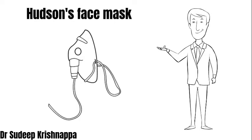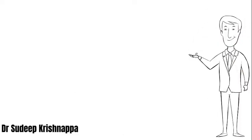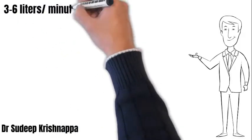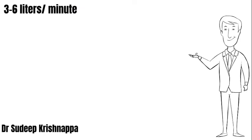Over the course of the next few minutes, we will be talking about Hudson's face mask with regards to what is the minimum flow needed — whether it's an arbitrary number or if there is a rationale behind it. We will also be talking about the effect of altering the fresh gas flow on two of the most important parameters: rebreathing and the variation in the inspired oxygen concentration. The rationale behind setting the minimum flow is to minimize or reduce rebreathing.